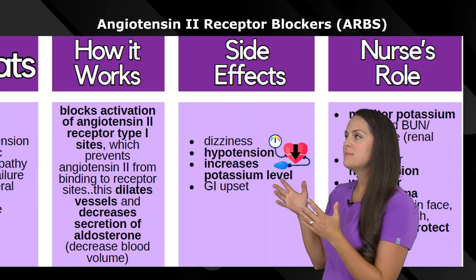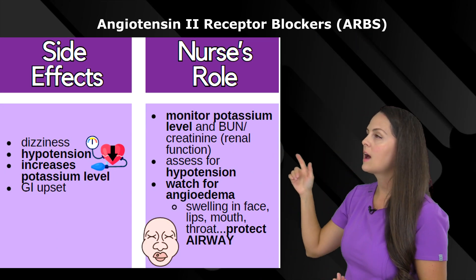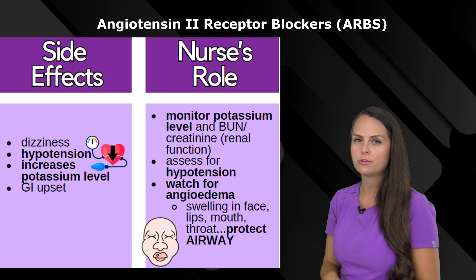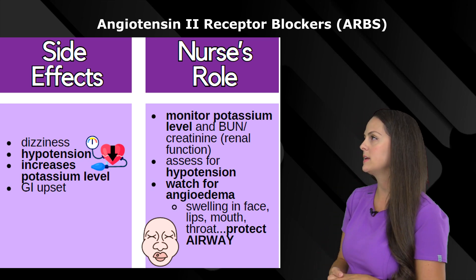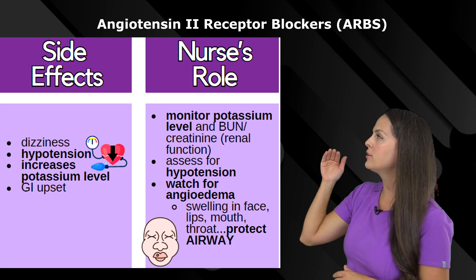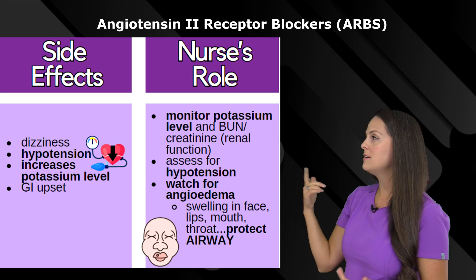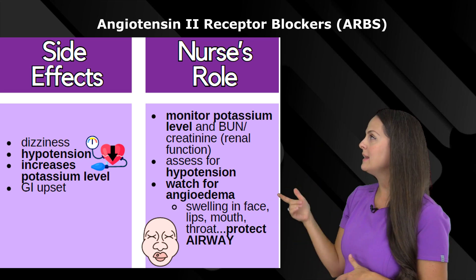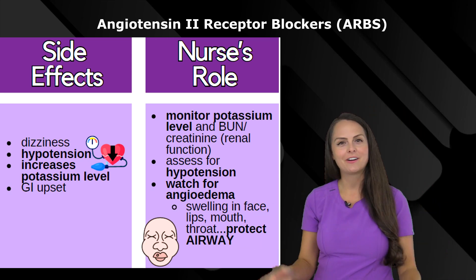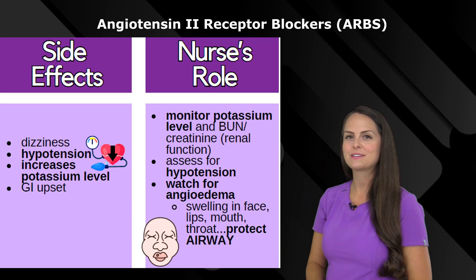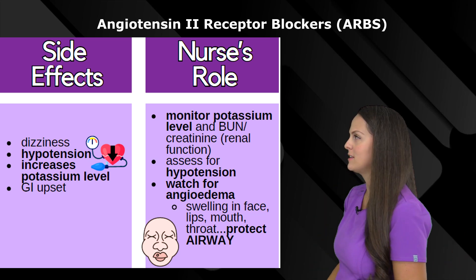Because of how these medications work, they can cause the following side effects: dizziness, hypotension — dropping blood pressure too low, particularly if there's too much medication in the system — and it can also increase the potassium level because of how it affects aldosterone. It can also cause GI upset, and most medications in these classes can cause GI upset, so always keep that in mind.